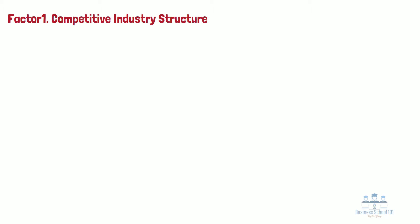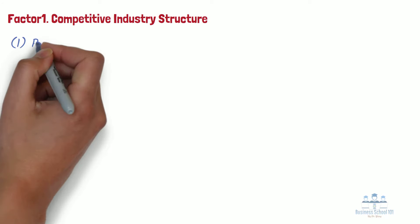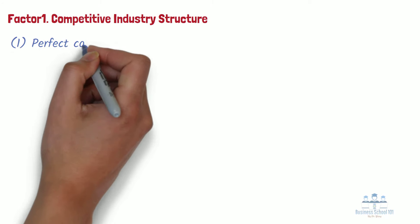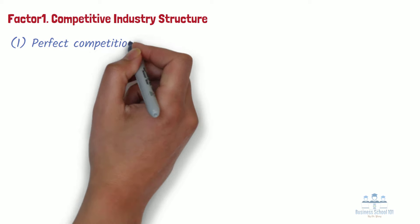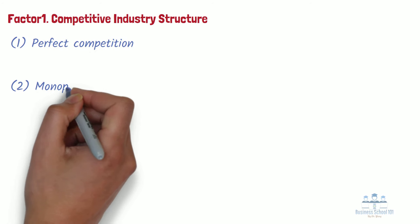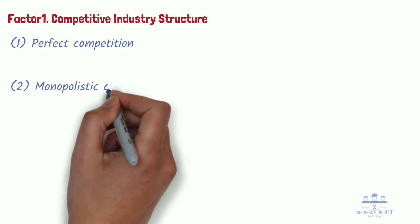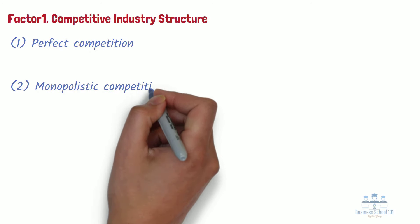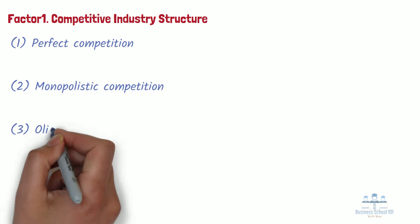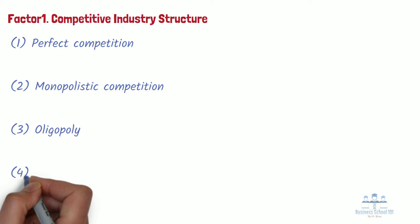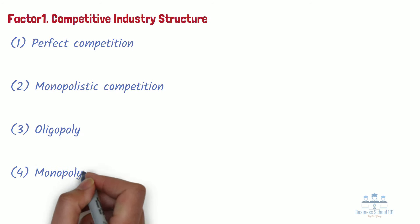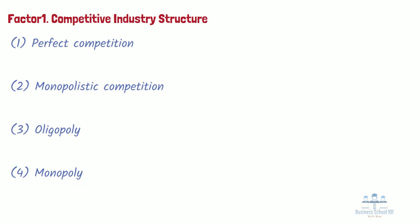The four main competitive industry structures are: perfect competition, monopolistic competition, oligopoly, and monopoly. Let us discuss these separately.